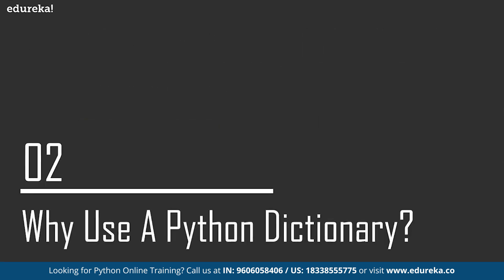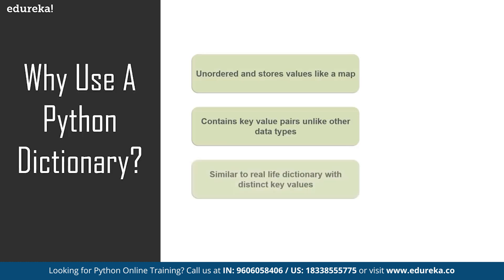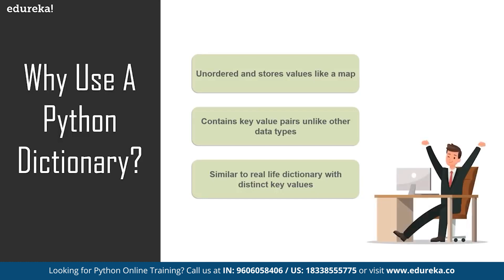Now that we know what dictionary in Python is, let's talk about why we use a dictionary. It is unordered and stores data like a map — that is one unique feature. It also contains key-value pairs, unlike any other data type or object in Python. It is almost similar to a real-life dictionary where we have distinct values and corresponding definitions. Even though there are no duplicate members, we can mention duplicate values, but the keys have to be unique. We use the keys as indexes when accessing elements.